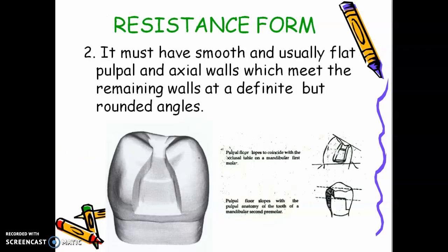Next, it must have smooth and usually flat pulpal and axial walls which meet the remaining walls at a definite but rounded angle. So all line angles are defined but not sharp. It's kind of rounded a little bit.